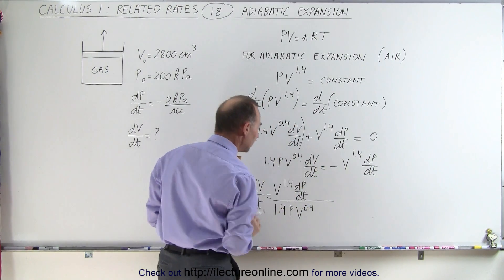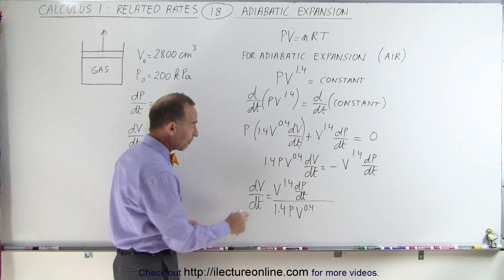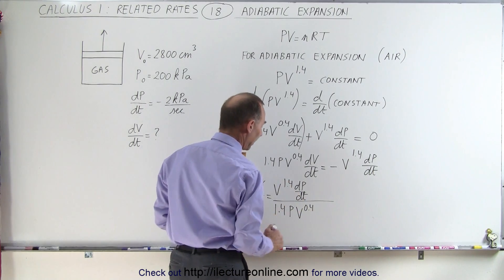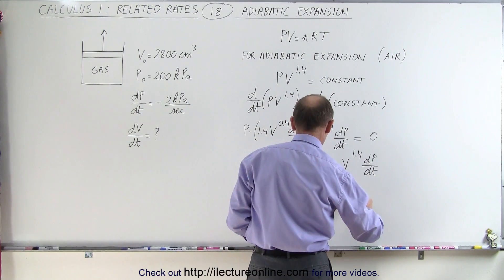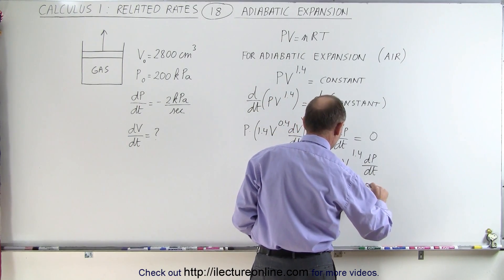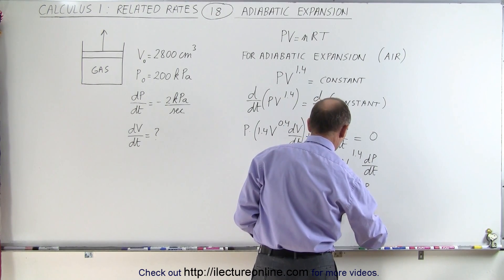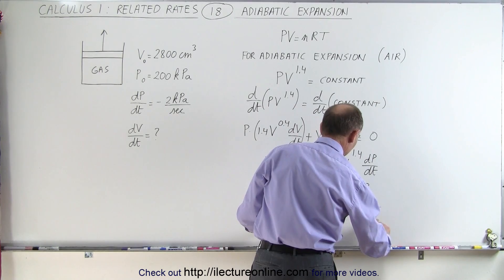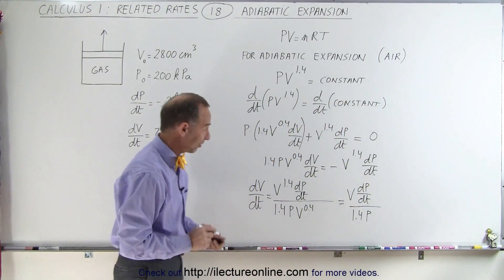Now luckily we have a V to the 1.4 power and V to the 0.4 power, so we can simplify that. This can be written as V to the first power dP/dt divided by 1.4 P, so we don't have to work with any fractional exponents.